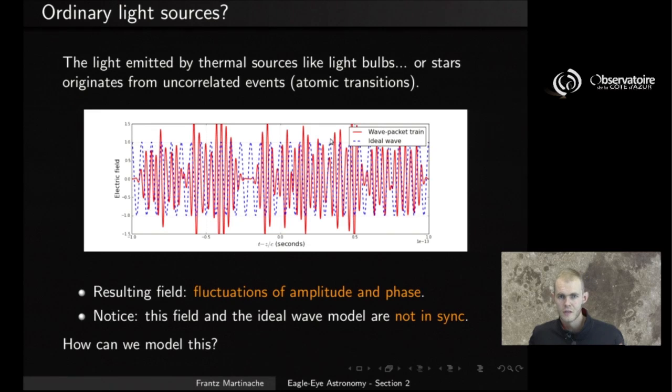And this is typically what a slightly modified wave model would look like. In red here, you have a maybe slightly more representative wave that is represented. And in blue, in dashed line in blue in the back, I've compared it to our original ideal model. Now what you see is that because we have uncorrelated events that are the origin of bursts of emission, the result is that we have fluctuations in the amplitude and in the phase of our signal.